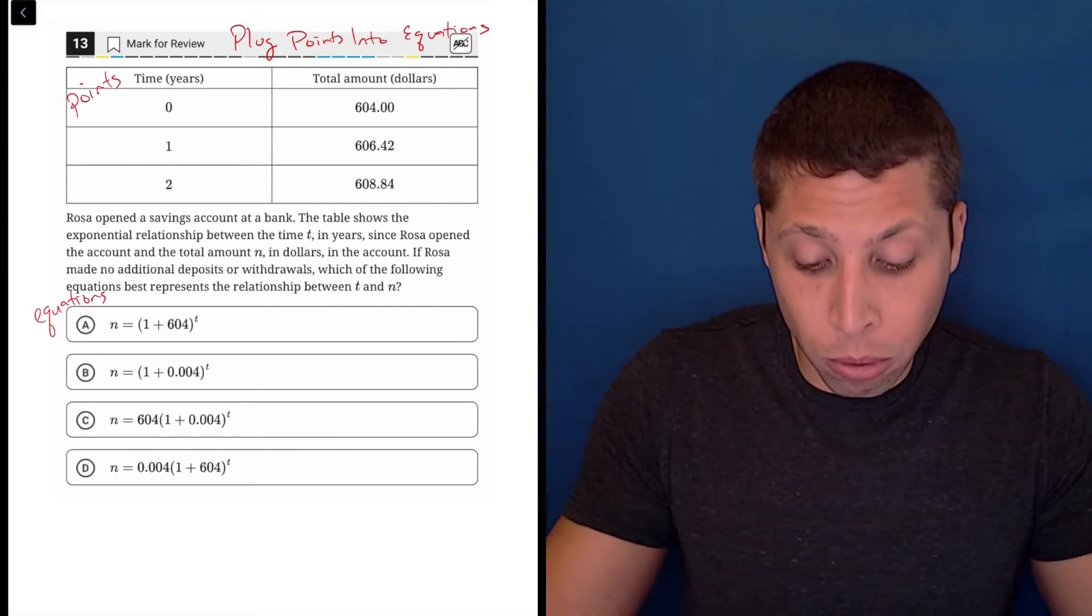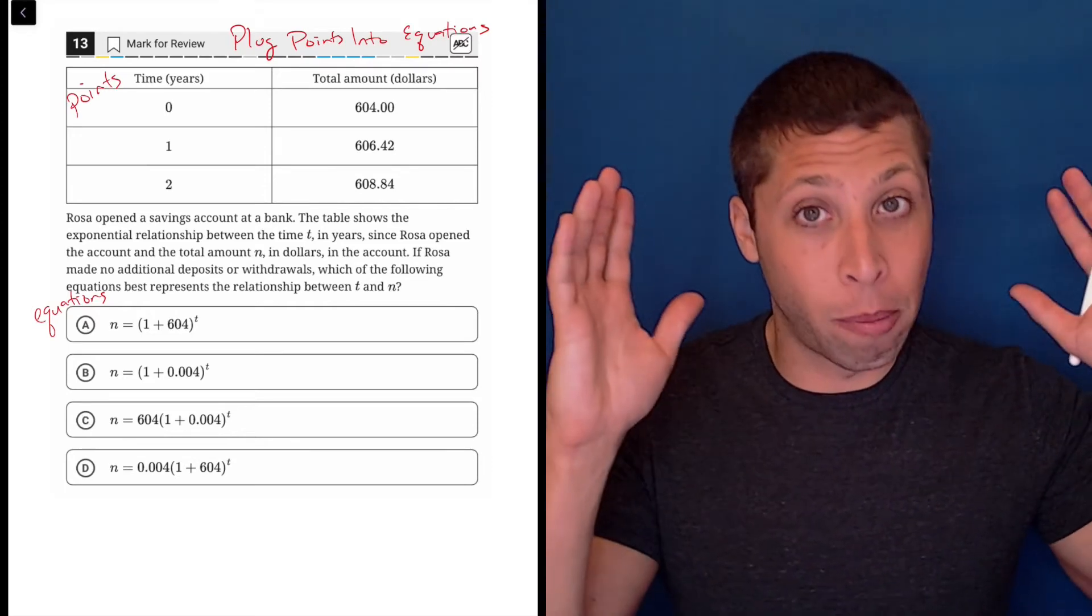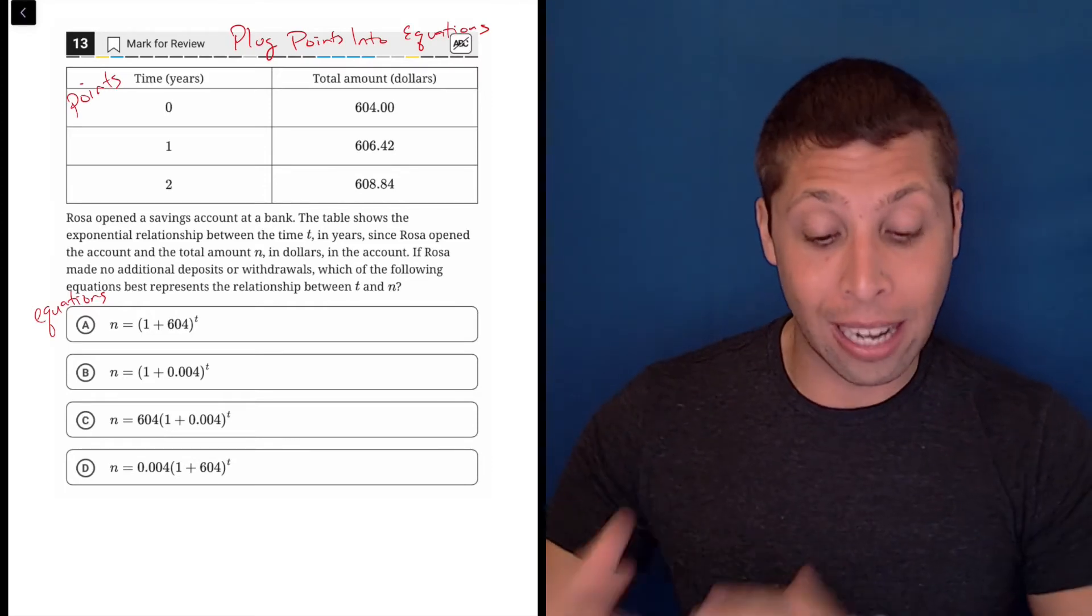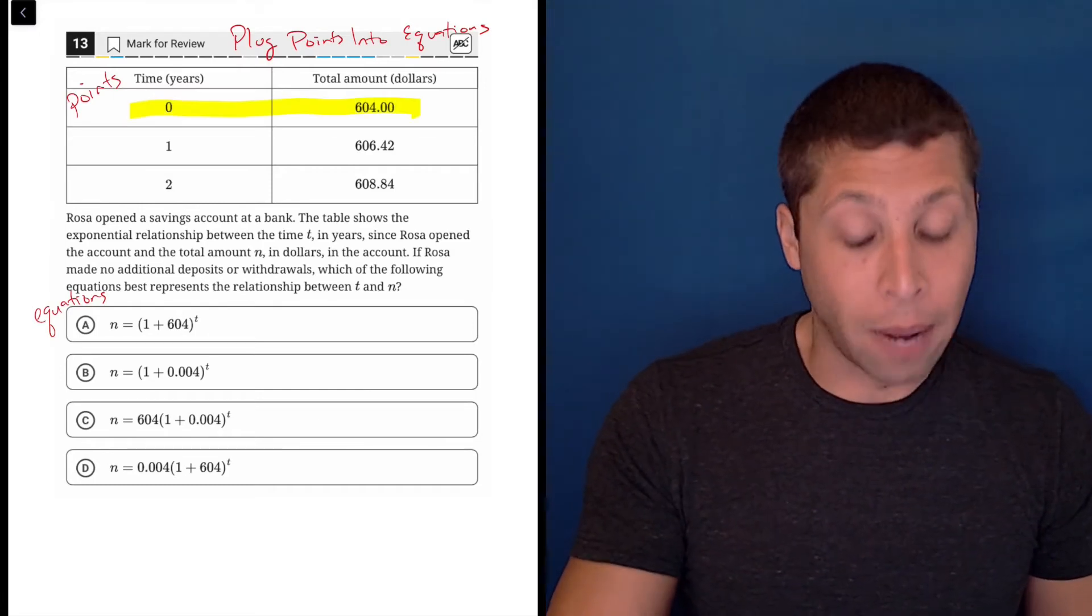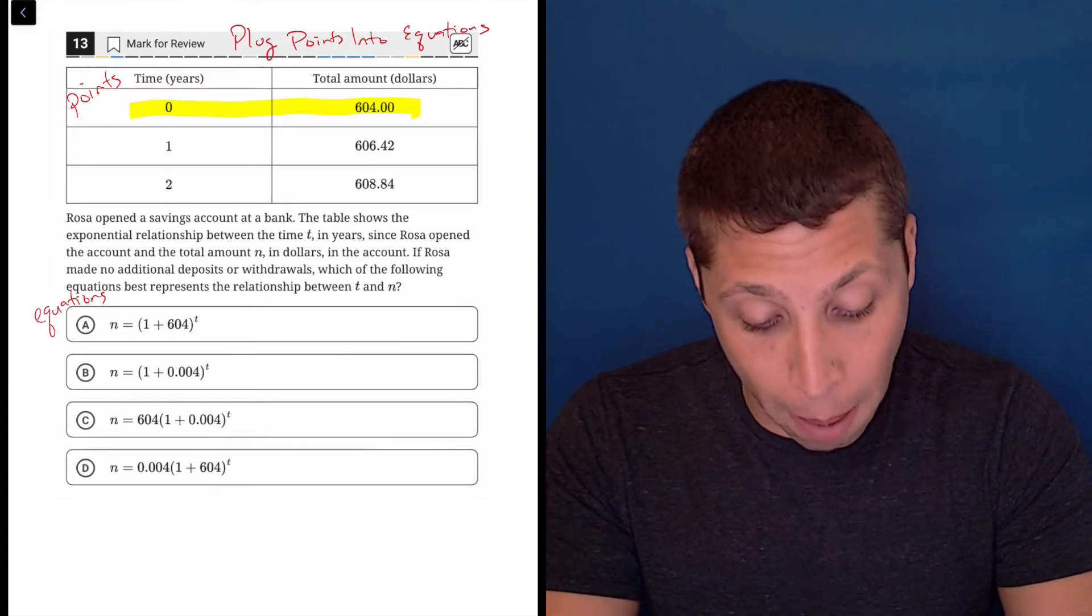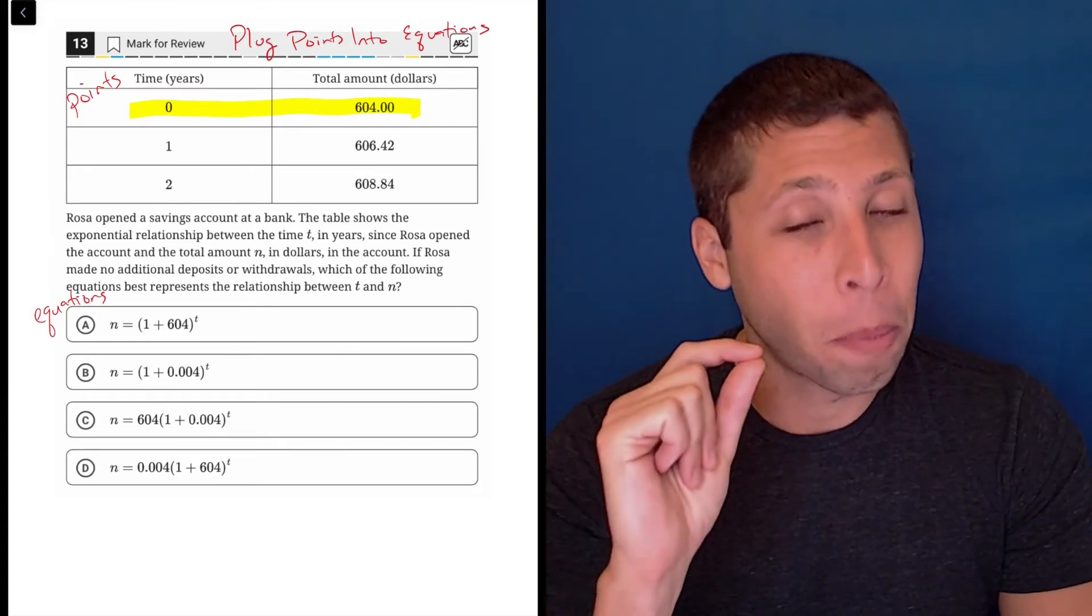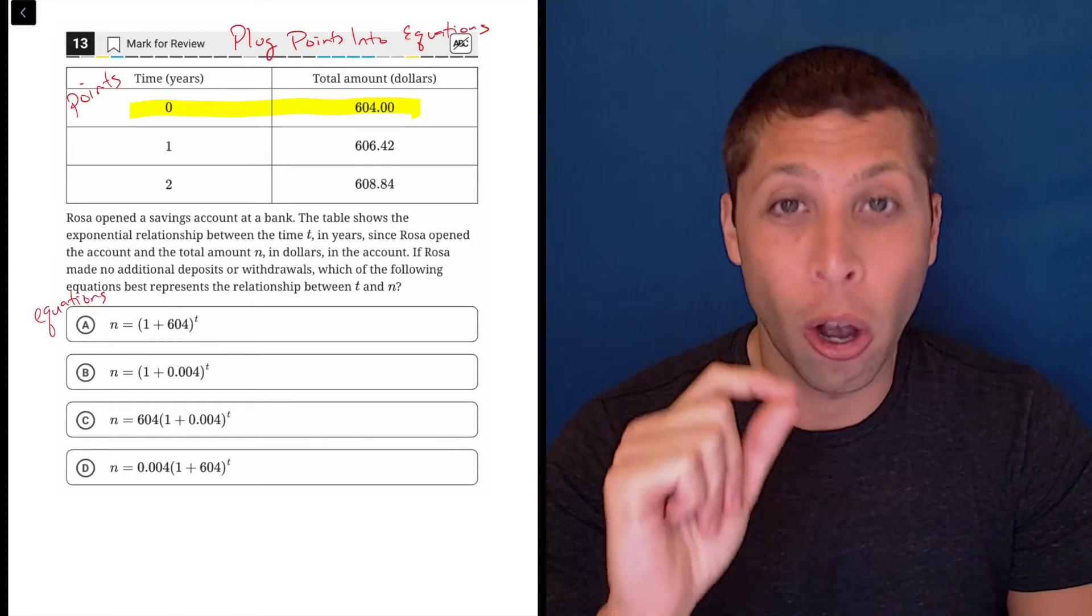So I don't care about Rosa and her savings account. I care about points and equations, and I'm going to pick the easiest point, which is 0, 604, and I'm going to plug it into all the equations and see what happens. And because zero is such a powerful number, it's going to make things so simple here. Watch.